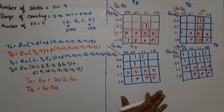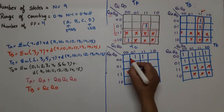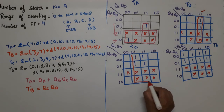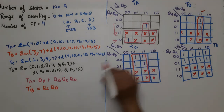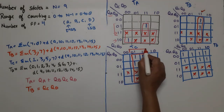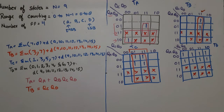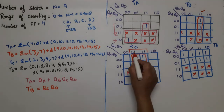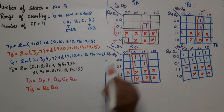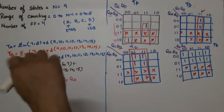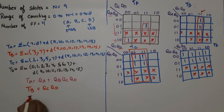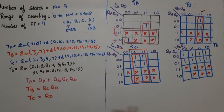For TC simplification: one octet is possible. Using two rows, the common value is 1 for QD. So TC = QD.